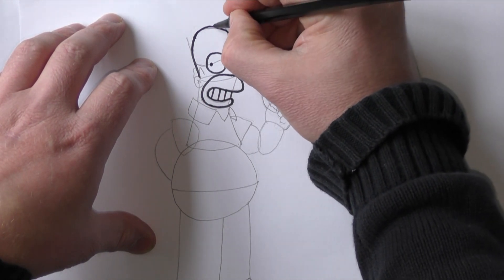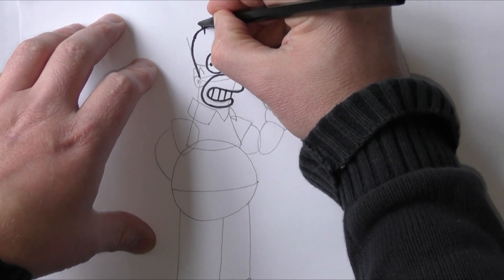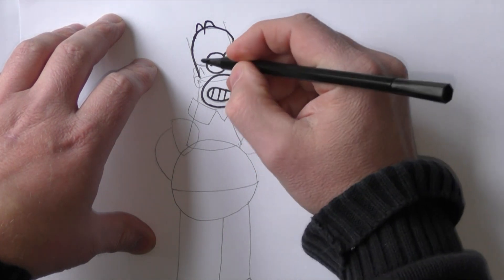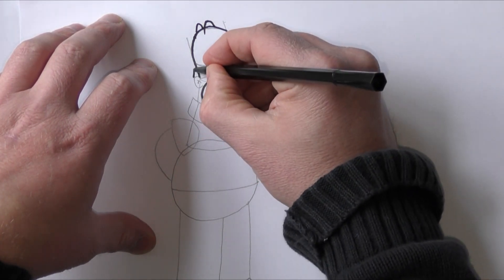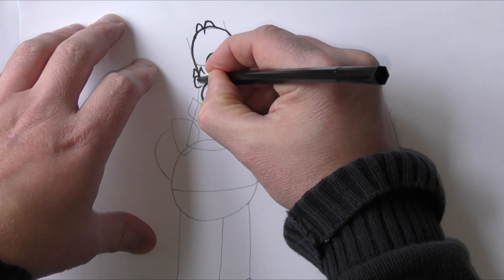So as we know Homer hasn't got a lot of hair, he's got a couple of hairs there at the top of his head. And we'll just do the bit of hair there for Matt and then the ear for the Groening which I mentioned earlier.